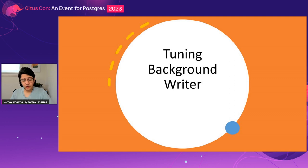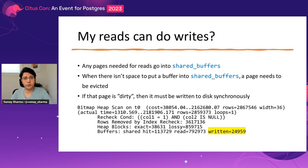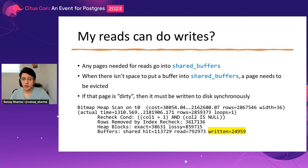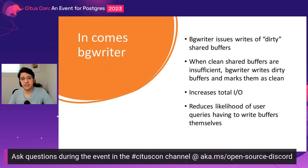Let's talk about the background writer. Why do we need it when we already have a checkpointer? Postgres uses shared buffers as its buffer pool — any reads or writes need to pull things into shared buffers. Shared buffers is a limited resource, so when there's no space for new buffers, something must be evicted. If that page was dirty, it must be written to disk synchronously in the middle of the query. The background writer periodically flushes dirty buffers so that backends don't have to do this synchronous IO during user queries.